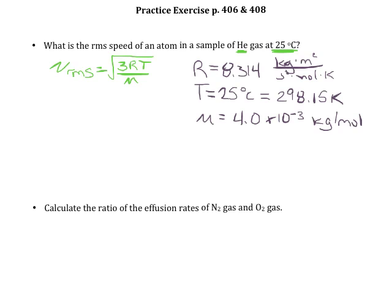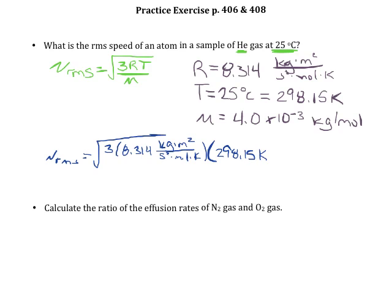So we can just plug in all of those numbers. Root mean square speed equals the square root of 3 times 8.314 kilogram meter squared per second squared mole Kelvin times 298.15 Kelvin, all of this is still under that square root sign, divided by our molar mass, which is going to be in units of kilogram per mole.